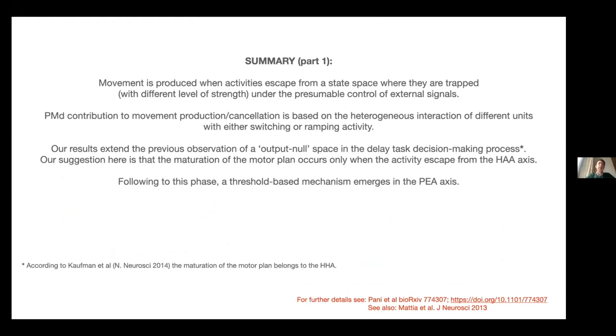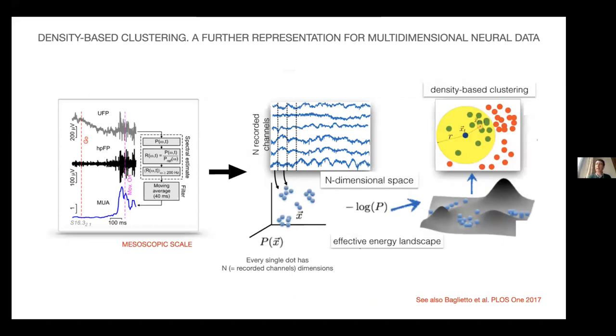So in summary here: movement is produced when activity in our two-plane representation of the initial one escapes from a state space where the activities are triggered. The premotor cortex contribution to movement production and cancellation is better based in a heterogeneous interaction of different units with either switching or ramping activity. Our results extend other observations from Shenoy's group where in a delayed task it was proposed that output-null space exists, but our suggestion is that the maturation of the motor plane occurs only when the activity escapes from the holding axis. Following this phase, a traditional race mechanism emerges in the planning execution axis. So it's a good way to say that the race model probably needs to be revised, at least for the premotor cortex.